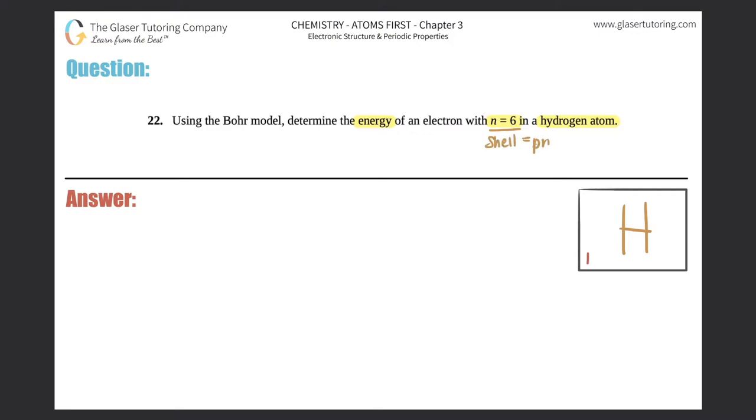And remember, shell is the same thing as principal quantum number. So this is where the element lives in n equals six. That means that it's the sixth circle, if I drew it, outside of the nucleus.